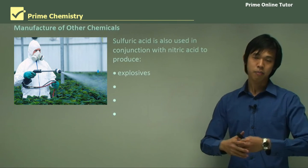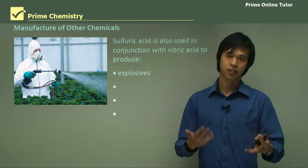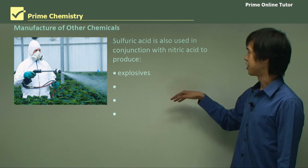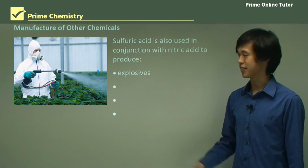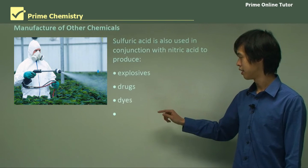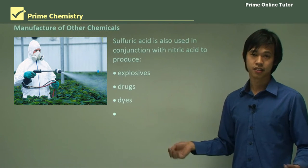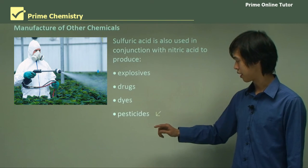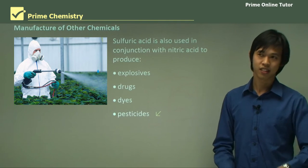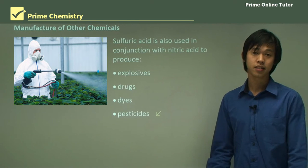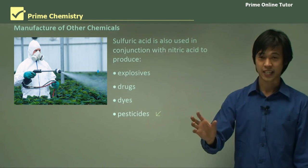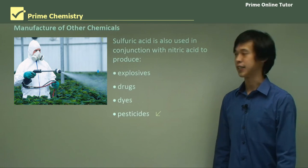There are also some miscellaneous applications. Sulfuric acid is used in conjunction with nitric acid to produce explosives, pharmaceuticals, dyes, colorings, and pesticides. These are all cases where sulfuric acid is part of the process, whereas the other uses I've mentioned are ones where sulfuric acid is one of the main components of the reaction.